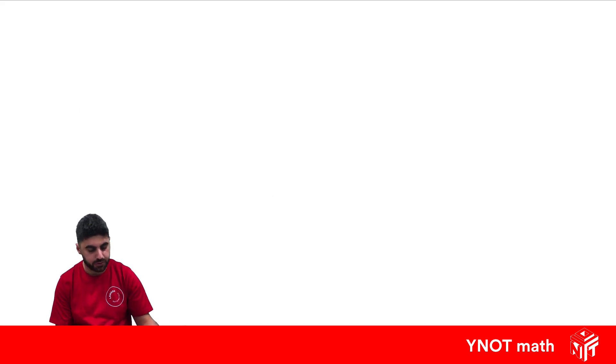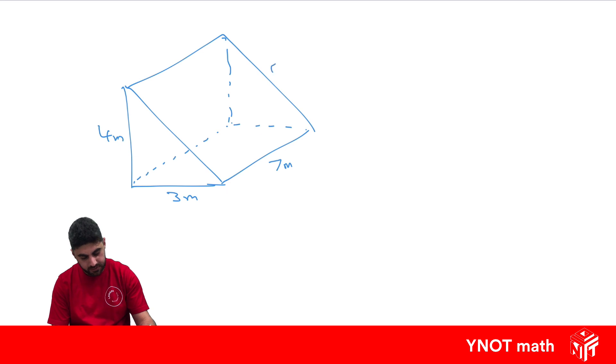Let's have a look at the triangular prism this time. 7 meters, 3 meters, 4 meters, and 5 meters. Now, how many faces does the triangular prism have? Well, this has five faces. We've got one at the front here, one at the back, one at the bottom, one at the left, and this one here that's slanted on the right.